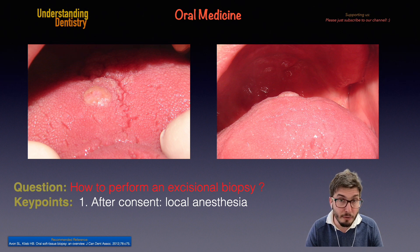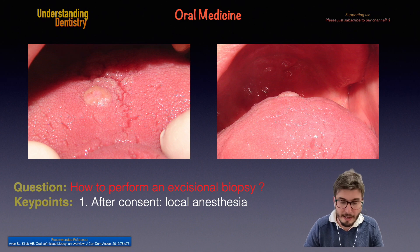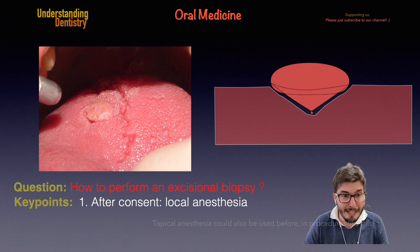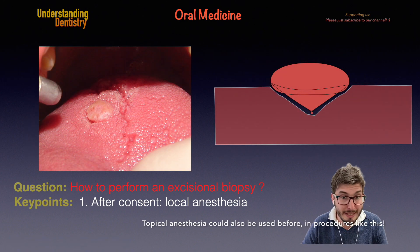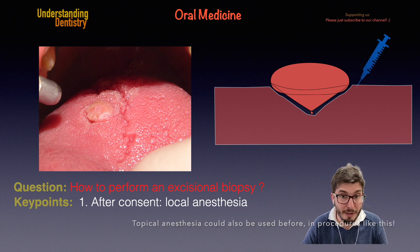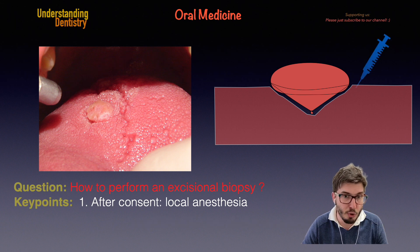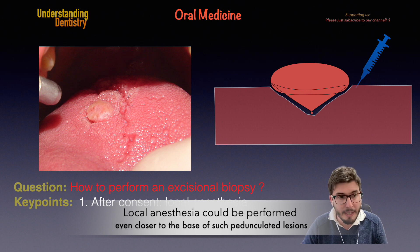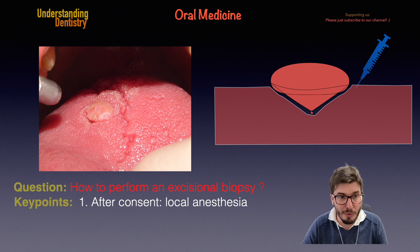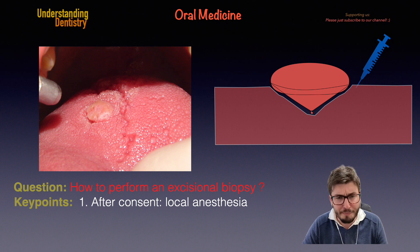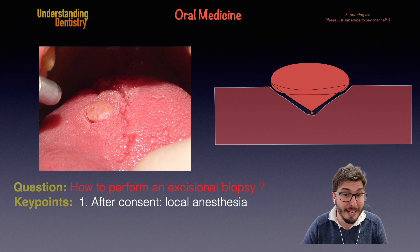After you get the consent of the patient, we can start with the local anesthesia. You want to perform the local anesthesia close to the base of the lesion. In the picture on the left side of your screen, we are blowing some air and now we can see that the lesion is actually pedunculated. We perform the anesthesia and then move to the next step.